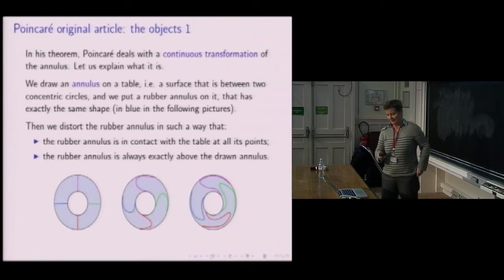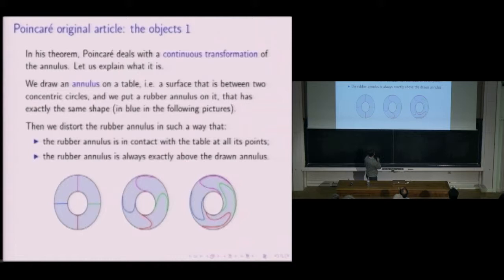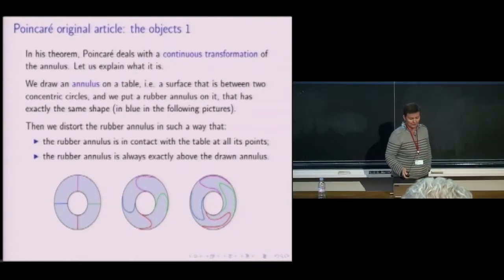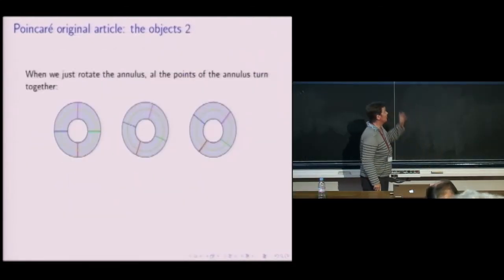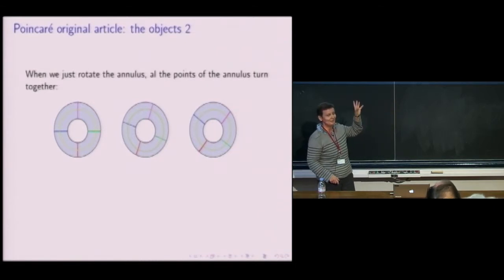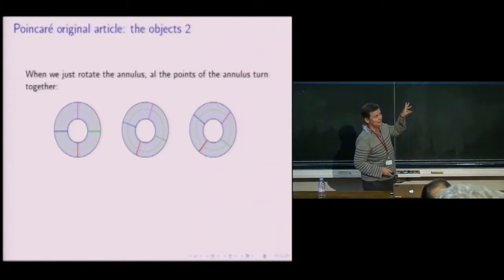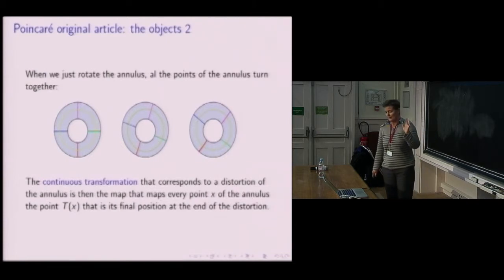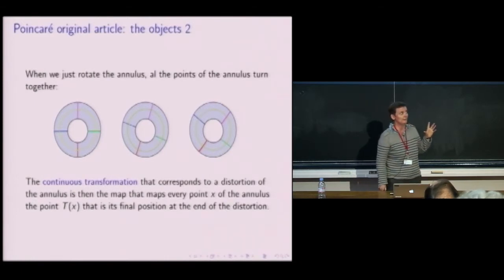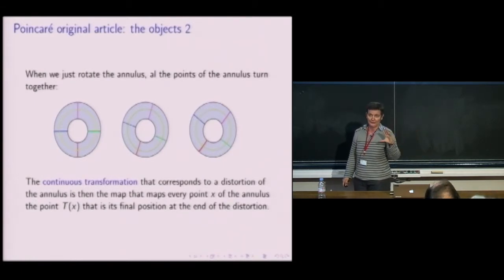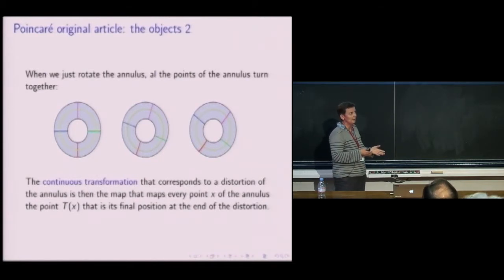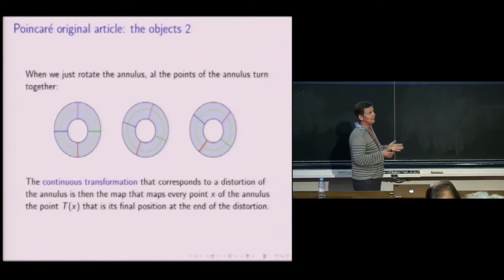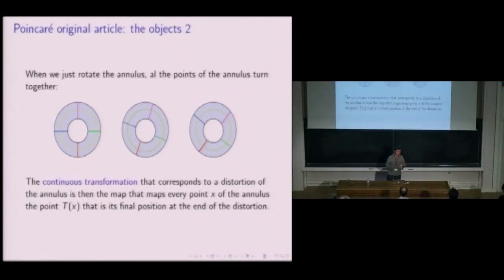On the picture, you see what happens to some segments during the distortion of the annulus. You can have other distortions — for example, rigid rotation, though it is not really a distortion because everything moves together. To each such distortion you can associate a continuous transformation of the annulus, and in fact to each point of the annulus you associate T of X, that is the final position after the distortion — the final position of X.